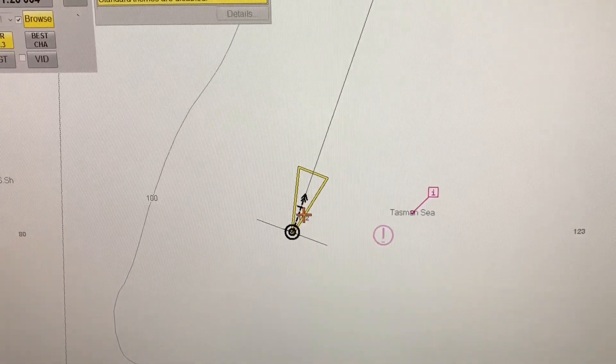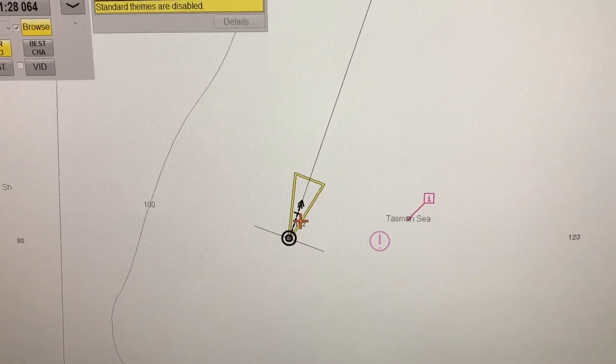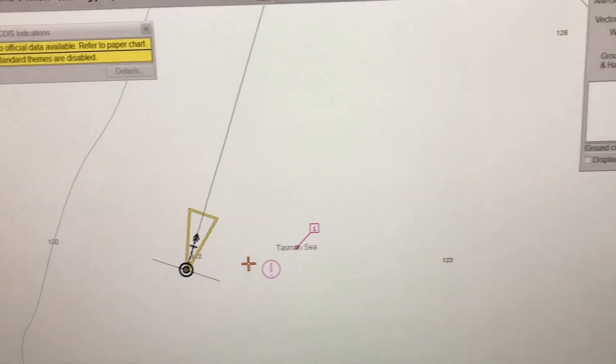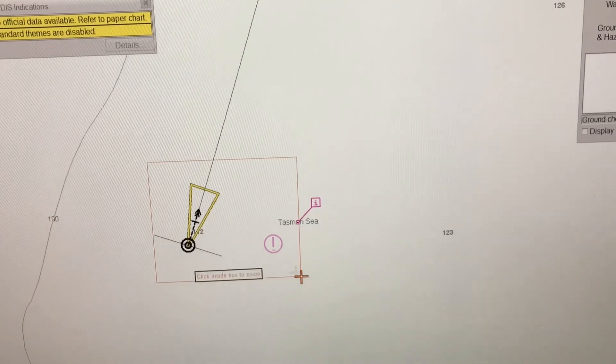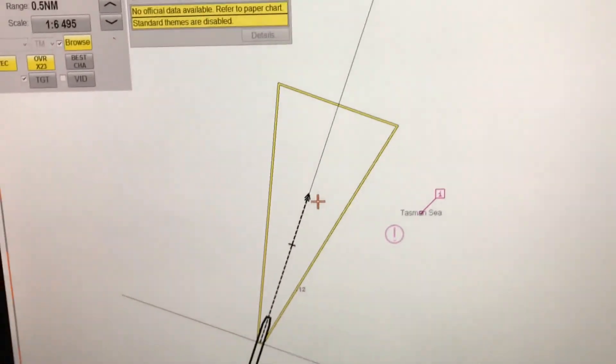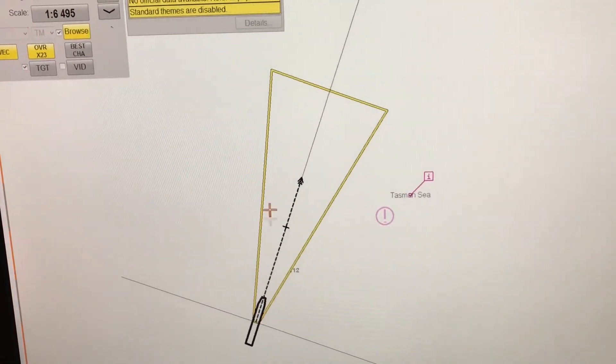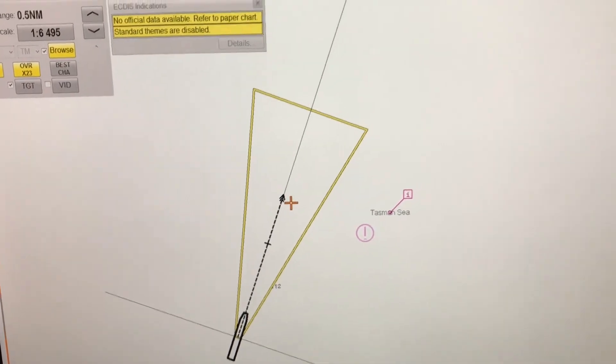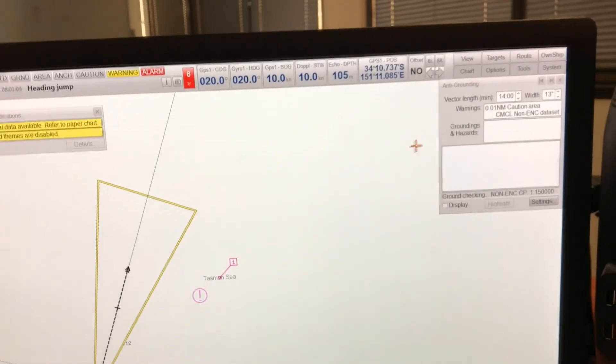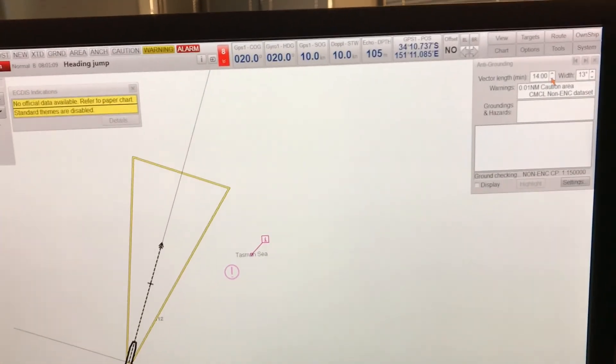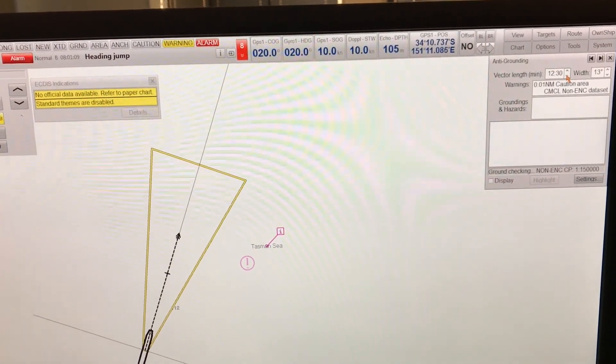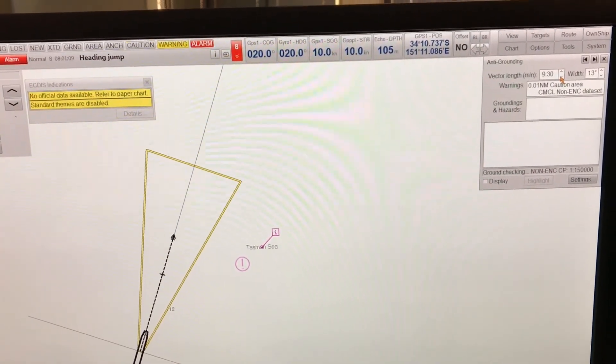You can set it as per your choice. If you are, let's say, transiting in coastal passages, you can have a longer vector length and a broader width. The vector length signifies where you will be after those minutes, so 14 minutes means that is where the ship will be after 14 minutes at the end of that vector.